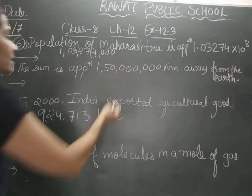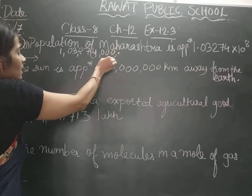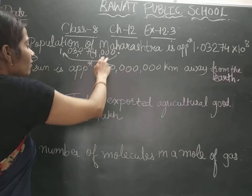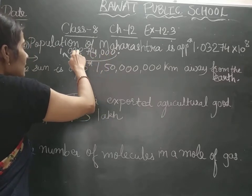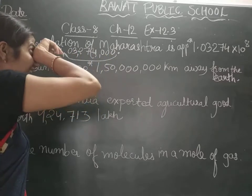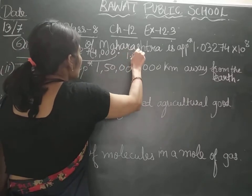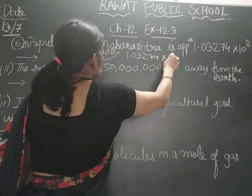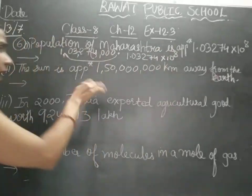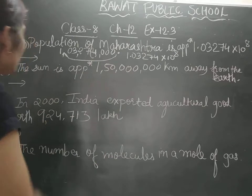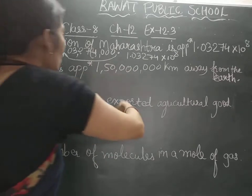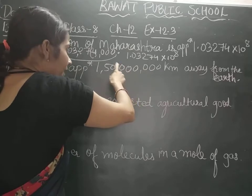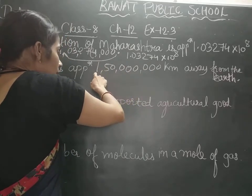Consider the decimal at the end. Now we will shift the decimal to after the digit 1. How many digits in between? 1, 2, 3, 4, 5, 6, 7, 8 — that is 8 digits. So we write it as 1.03274 into 10 raised to 8.